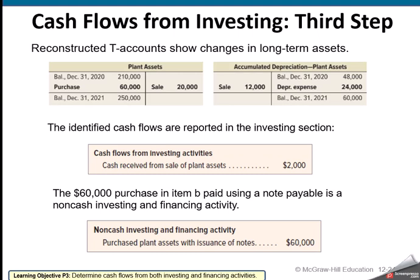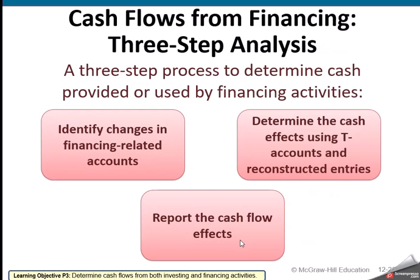What we've determined: we have only the $2,000 coming in for investing. That $60,000 is a non-cash activity, which would go into the bottom of the statement.